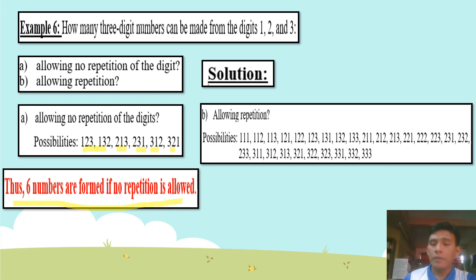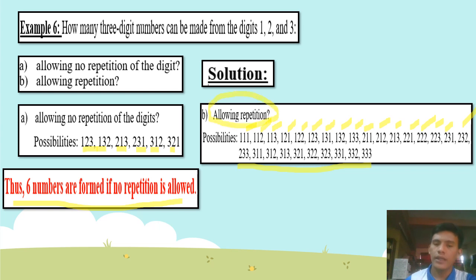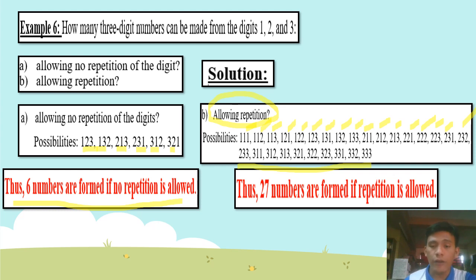For B, allowing repetition. The numbers include repeated digits such as 111, 112, 113, 121, 122, 123, and continuing through all combinations where digits can repeat — for example 222, 223, 231, 232, 233, and so on. All the possibilities give us 27 numbers formed if repetition is allowed.